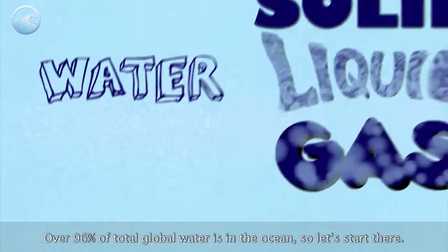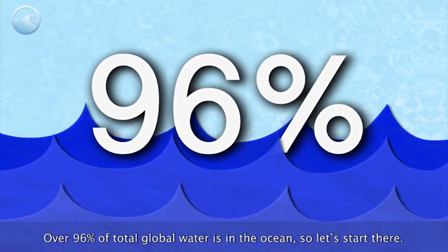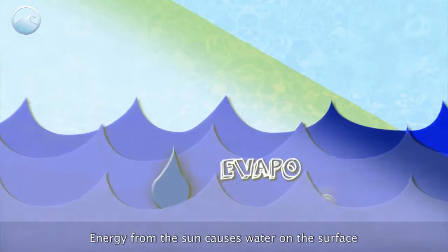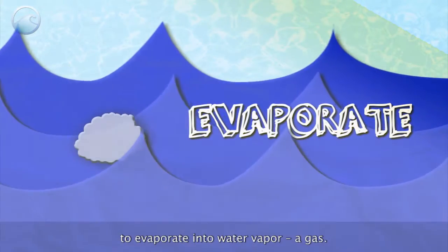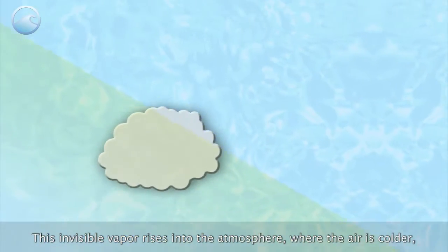Over 96 percent of total global water is in the ocean, so let's start there. Energy from the sun causes water on the surface to evaporate into water vapor, a gas. This invisible vapor rises into the atmosphere.